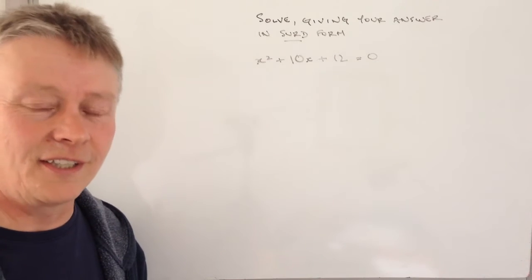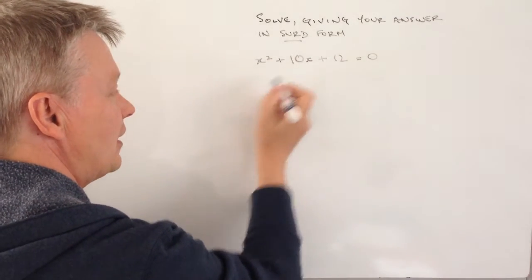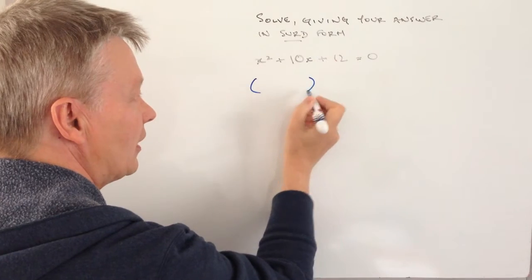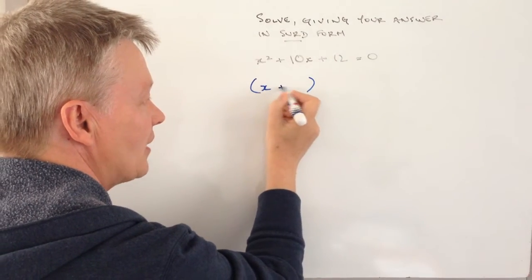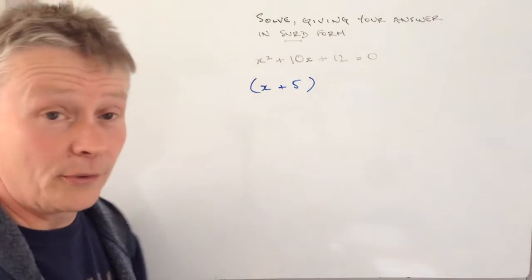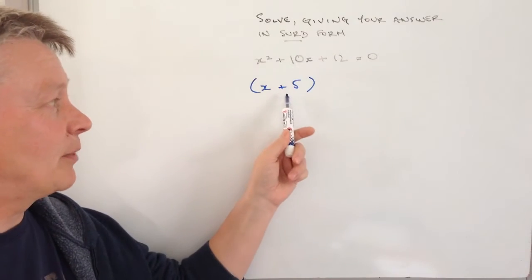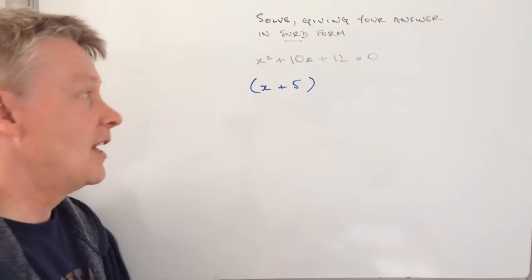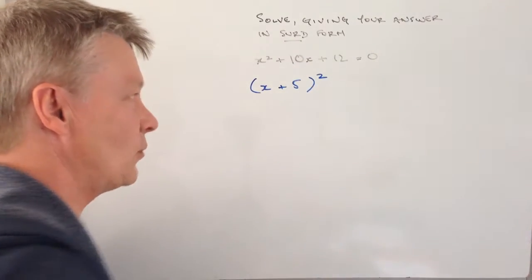We're going to put it in a slightly different form. The easiest way is to look at the first bit and say x plus 5. So the plus 10 here becomes half of that, and we're going to square it.